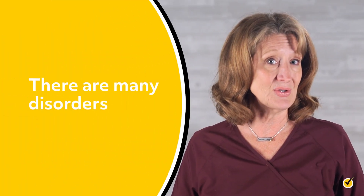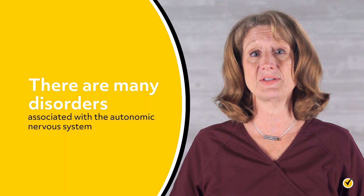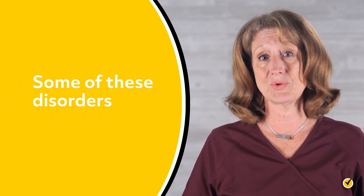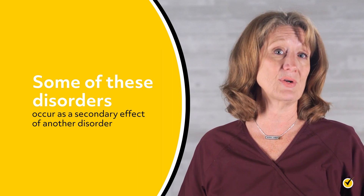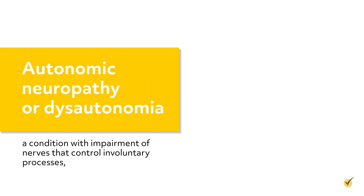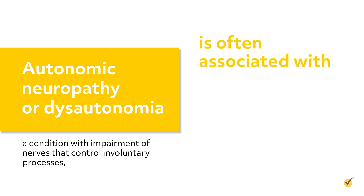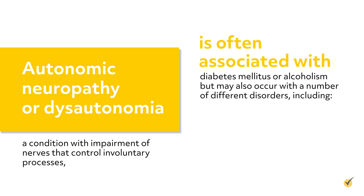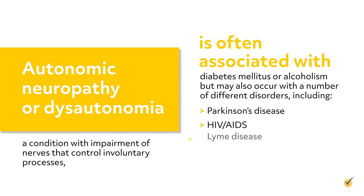There are many disorders associated with the autonomic nervous system. Some of these disorders occur as a secondary effect of another disorder. For example, autonomic neuropathy or dysautonomia, a condition with impairment of nerves that control involuntary processes, is often associated with diabetes mellitus or alcoholism, but may also occur with a number of different disorders including Parkinson's disease, HIV-AIDS, Lyme disease, and nutritional deficiencies.